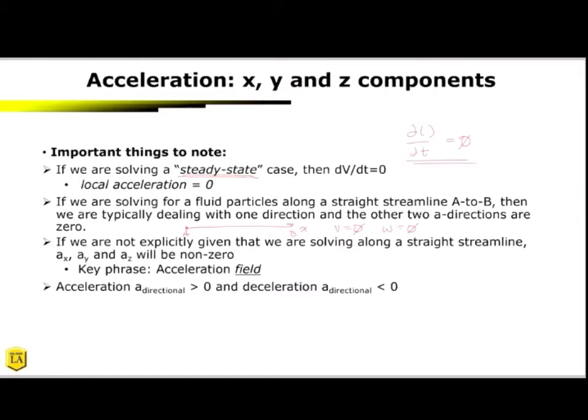Now, if the directional acceleration is greater than zero, then we have acceleration. If our directional acceleration is less than zero, we have deceleration. So that's just telling you whether we're slowing down or we're speeding up.